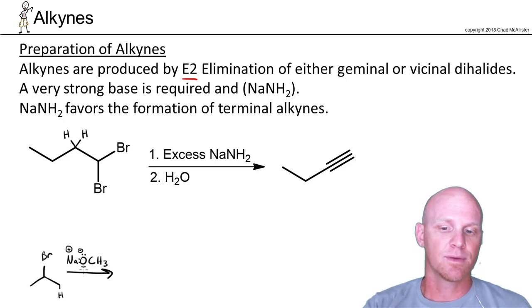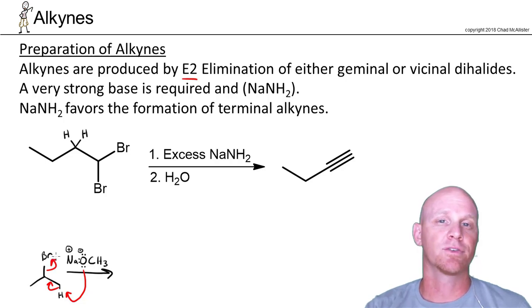In this case with E2 elimination, everything's a nice concerted mechanism. We deprotonate, proton transfer, frees up these electrons to make the pi bond, and kicks off the leaving group all in the same step. In here we'd get a nice lovely alkene.